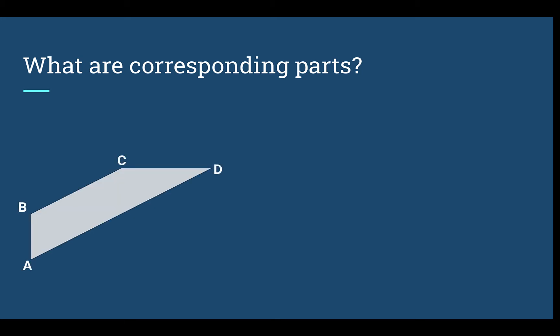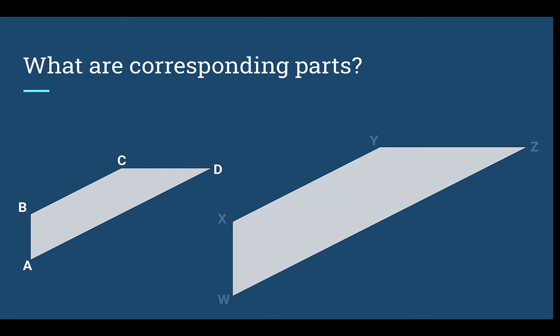We have shape ABCD and then a larger version, a scale copy of WXYZ. Corresponding parts are parts that are in the same spot on both shapes. So a corresponding point to B would be in the same exact spot on the other shape, which is X. If I had D, the corresponding point on the other shape would be point Z. Corresponding points are in the same place on the two shapes.